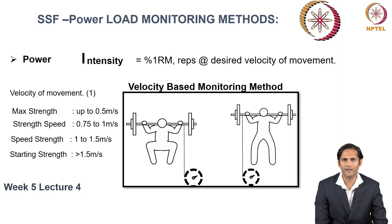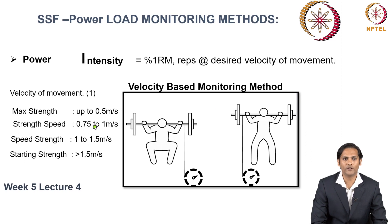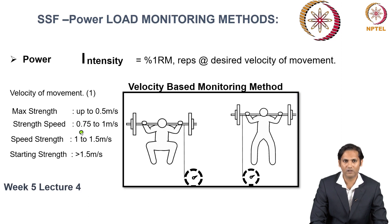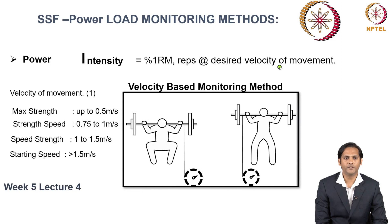As mentioned earlier, explosive strength has different variations characterized by the ability to move the load at the desired velocity. When the desired velocity is between 0.75 to 1 meter per second, it represents the strength speed ability of explosive strength, where the relative load is heavier or submaximal. When the velocity is between 1 to 1.5 meters per second, you use a relatively lighter load. In starting speed, the velocity of movement is greater than 1.5 meters per second, where the external load is your body weight.